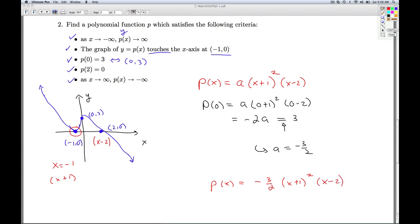Well, the last thing I need to check is that the end behavior works the way it should. What would the end behavior of this guy look like? Well, I'd go through and pick up the leading term. I'd have negative 3 halves. I'd pick up an x squared here and an x here. So it'd be negative 3 halves x cubed.